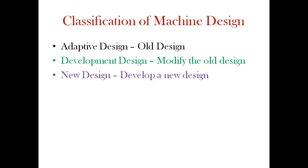For development design, suppose you have a product and there are some leakages — the customer is complaining. How do you rectify this design? You add special features to the current product. For example, how to start an engine: previously you used a kicker, now it is a self-start. The engine itself is not modified, but features are added. That is development design.